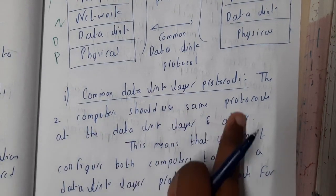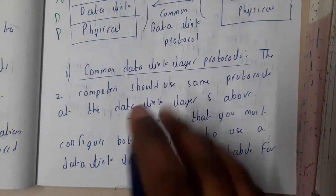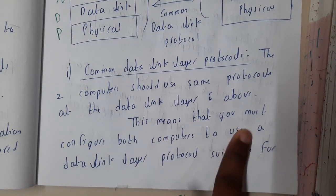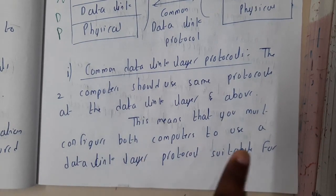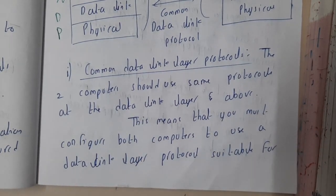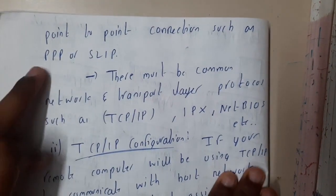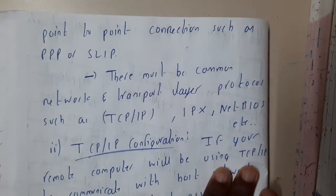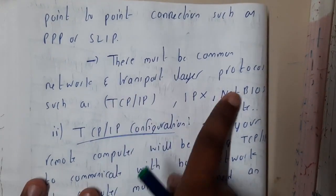Regarding common data link layer protocols: the two computers should be using the same protocol at the data link layer and above. This means you must configure both systems to use a data link layer protocol suitable for both uses, such as PPP or SLIP.